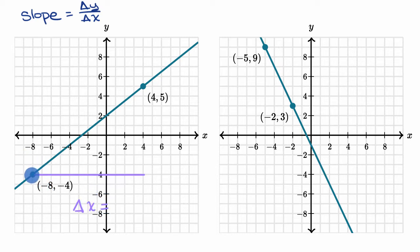our change in x over here, we're going from x equals negative eight to x equals four. So it takes us eight to get to the y-axis, and then four more. Our change in x is 12.